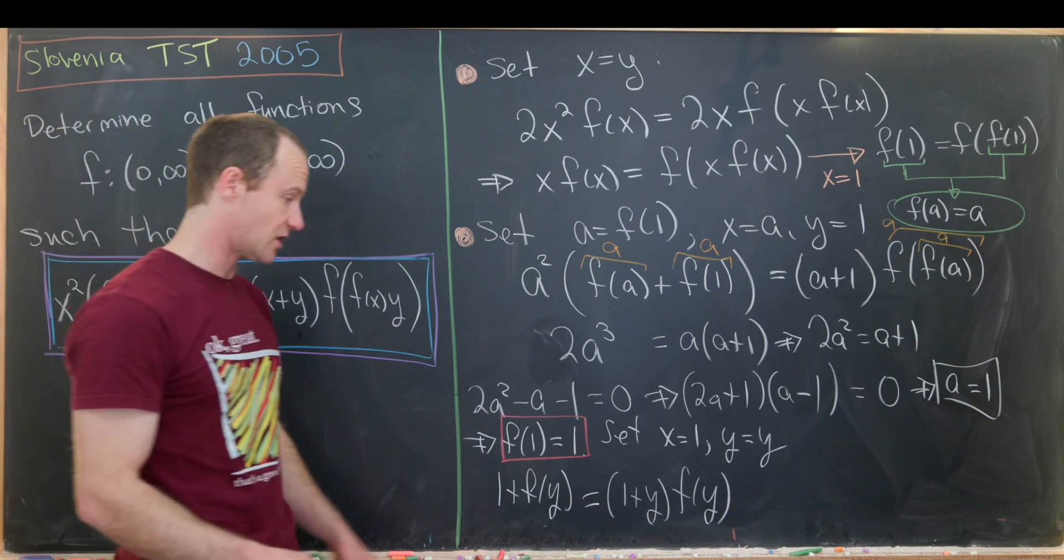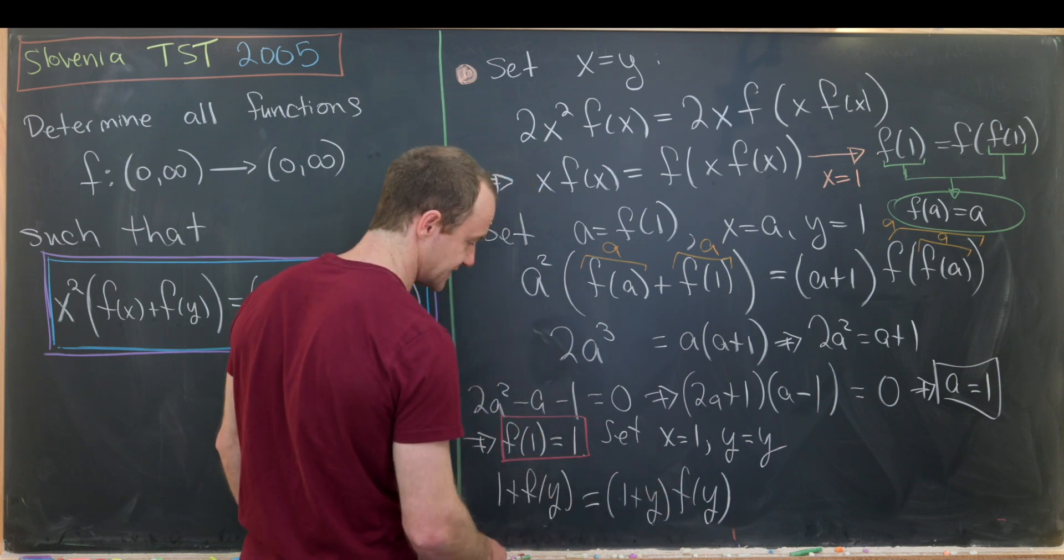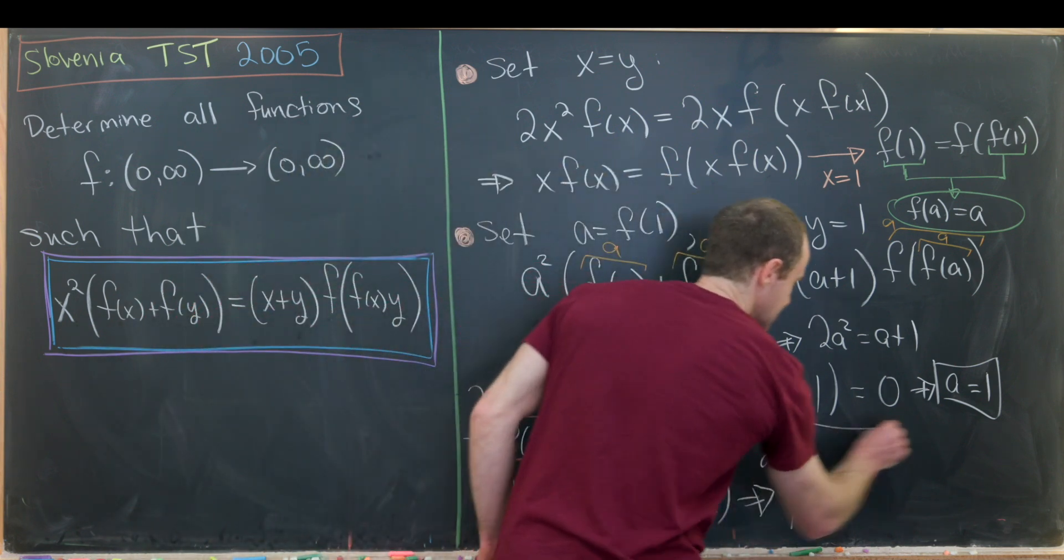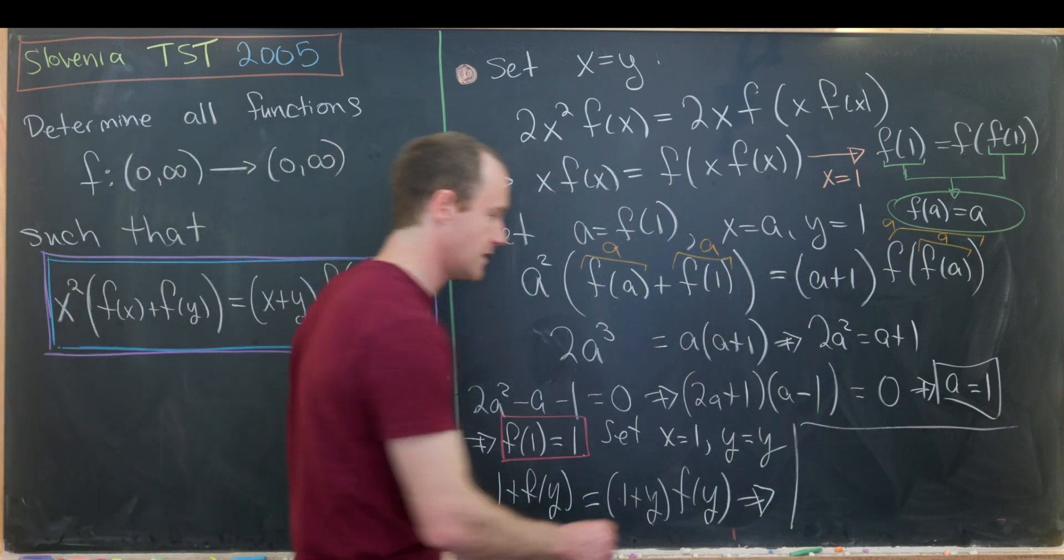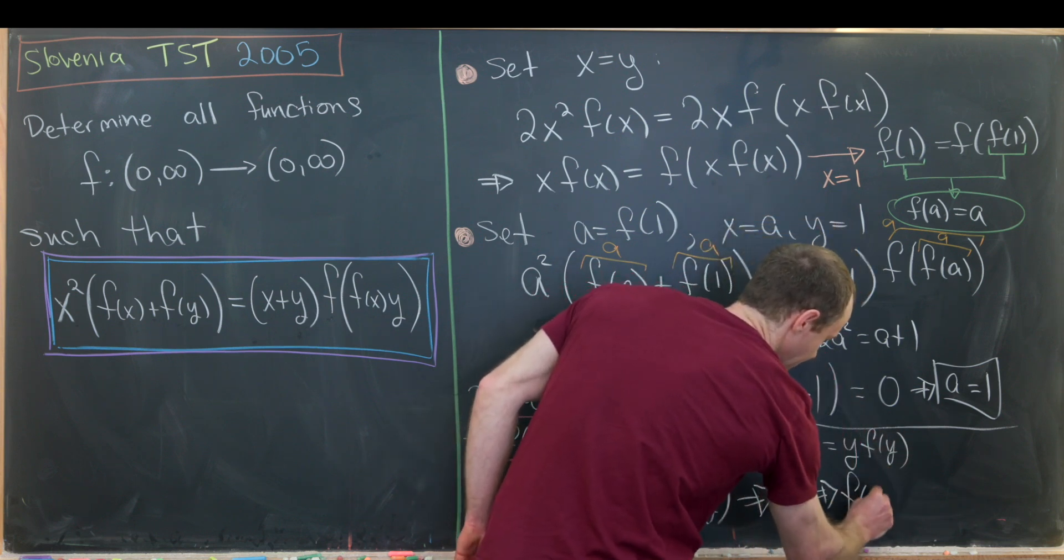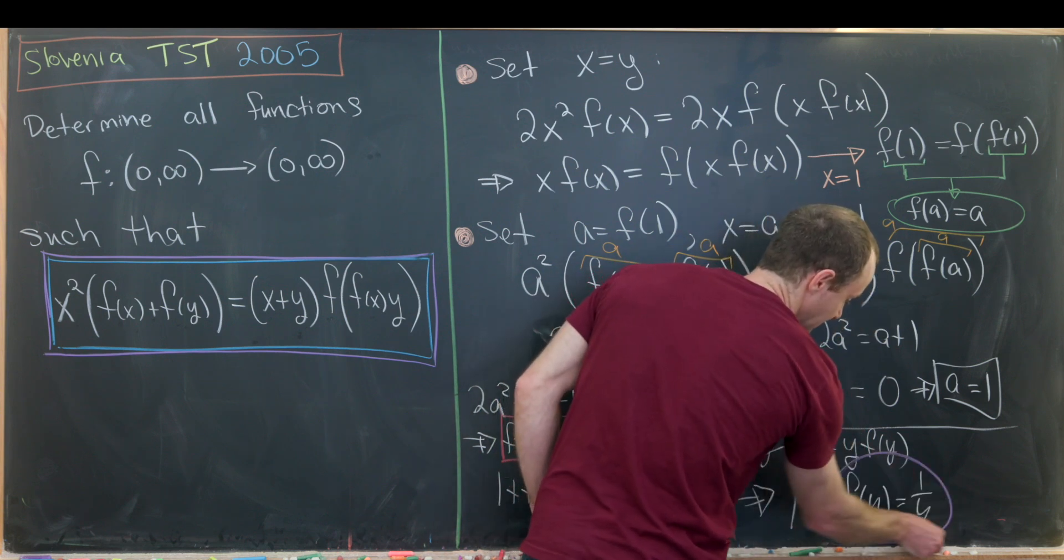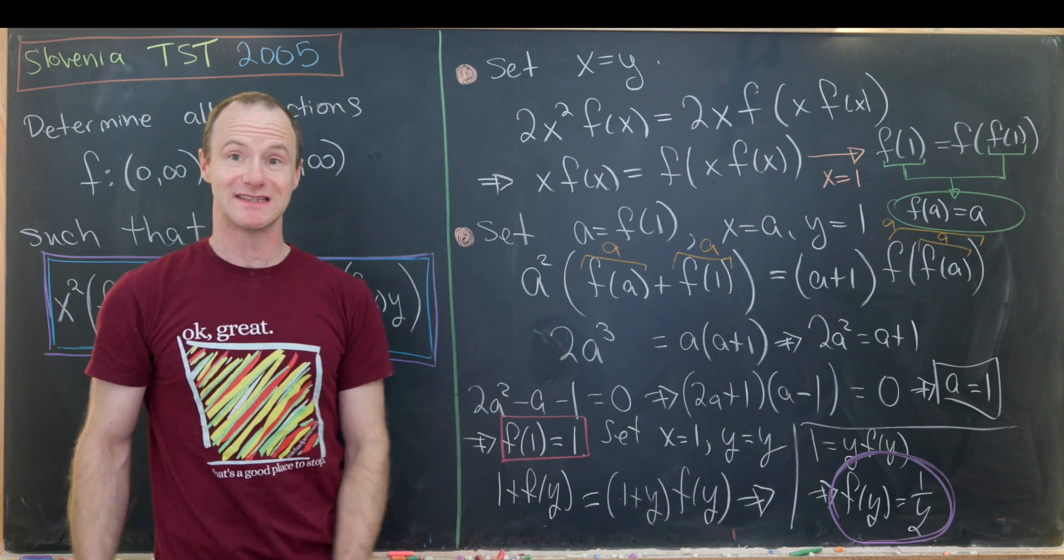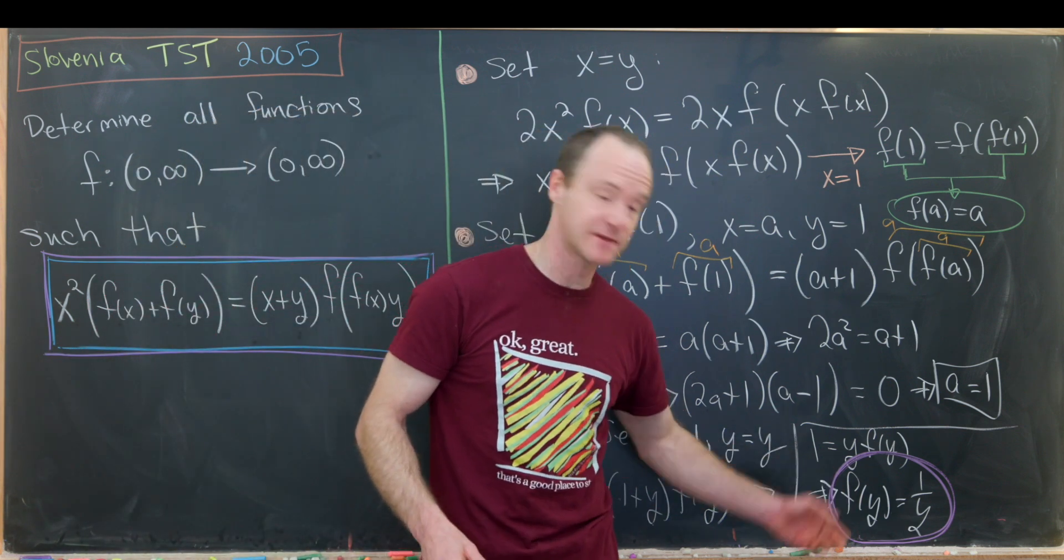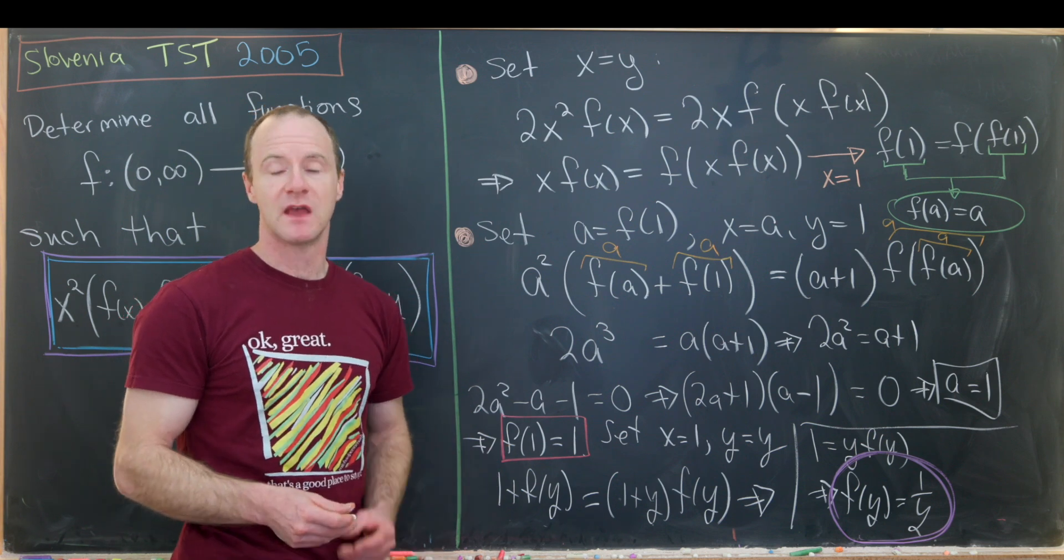But that's actually pretty easy to solve. Notice we can distribute out this right-hand side. We get one times f(y), which is f(y), and then y times f(y). So the one times f(y) will cancel with this, and that leaves us with one equals y times f(y), which means that f(y) = 1/y. And that's our function. This is the only function that satisfies this functional equation. So in order to actually finish this off, you'd need to plug this function back into this functional equation and make sure everything works. But I'll let you guys do that. And that's a good place to stop.